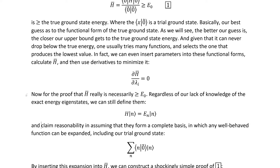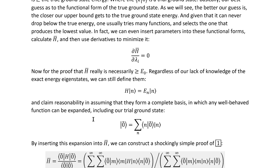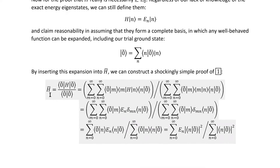With that introduction done, we now know what it is that we need to prove — namely equation number one. Regardless of our lack of knowledge of the exact energy eigenstates, we can still define them. They're still going to be the solutions to the eigenvalue problem with the quantum Hamiltonian, and we can claim reasonability in assuming that they form a complete basis in which any well-behaved function can be expanded, including our trial ground state. By inserting this expansion into h-bar, we can construct a shockingly simple proof.